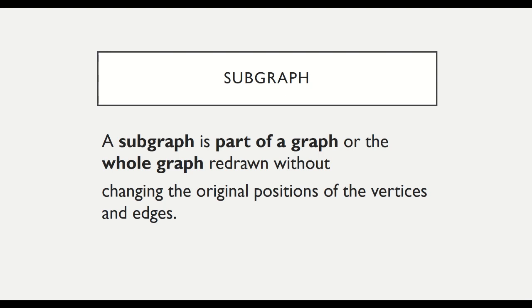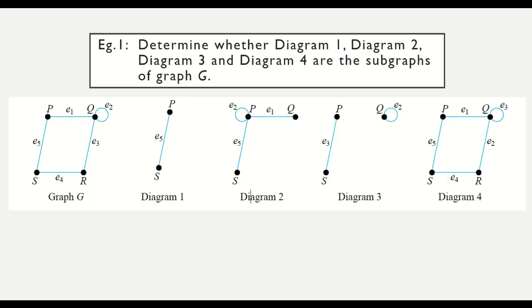A subgraph is a part of a graph, or the whole graph redrawn without changing the original position of the vertices and edges — meaning the vertices and edges remain in the same position. We look at the example: determine whether Diagram 1, Diagram 2, Diagram 3, and Diagram 4 are subgraphs of graph G.